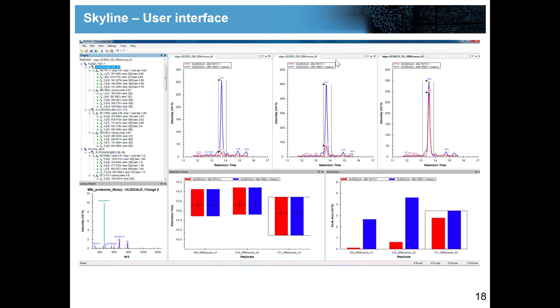This is how Skyline can potentially look like when you load data. Now there is no more gray window and the targets window is populated with information. This target window will always contain your targets of interest. This is where you specify what proteins, peptides, precursors, and transitions I'm interested in. It really has this tree-like structure. On the first level you will always have a protein name, under the protein on the next level you will have the peptide sequences that you want to target for that protein.